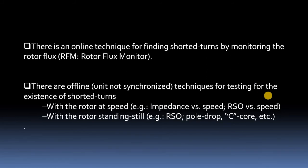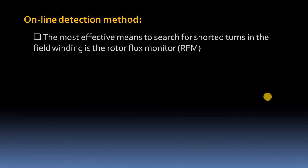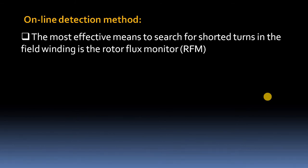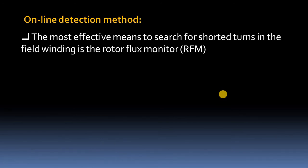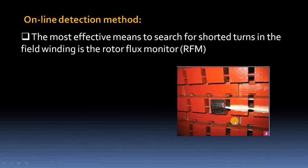Here we concentrate on the simple pole drop test as an offline technique, but we will also see the online technique briefly. In the online detection method, the Rotor Flux Monitoring technique is used. As the name indicates, we monitor the air gap flux or rotor flux by placing a sensor at the tooth of the stator winding. The sensor placed on the face of a stator tooth monitors the rotor flux, and from the resulting rotor flux plot we can identify which pole has shorted turns.